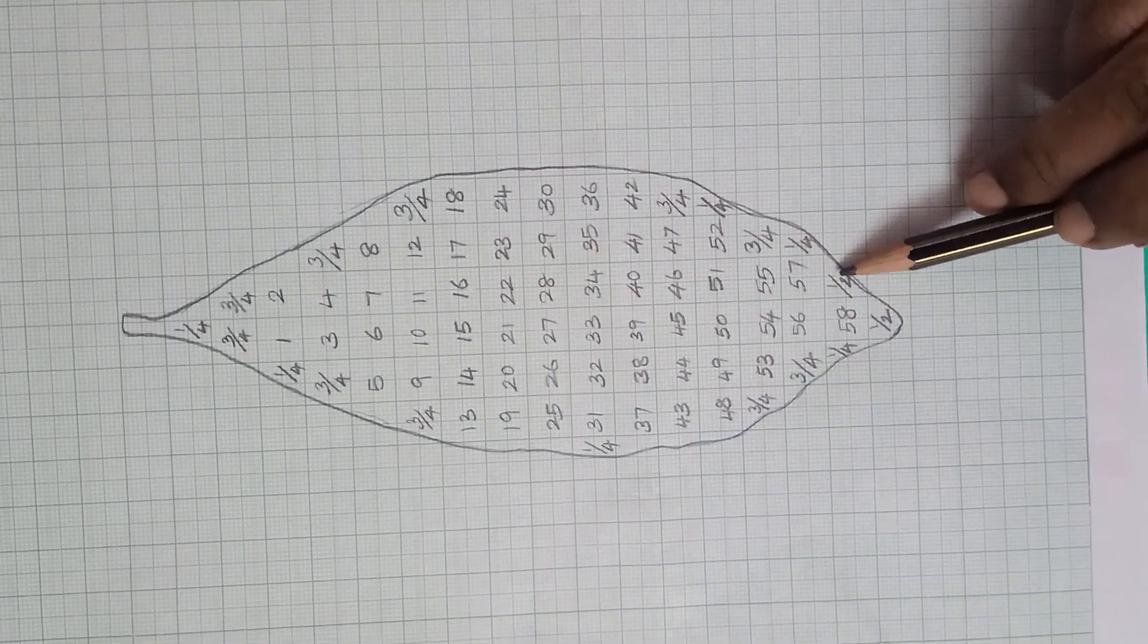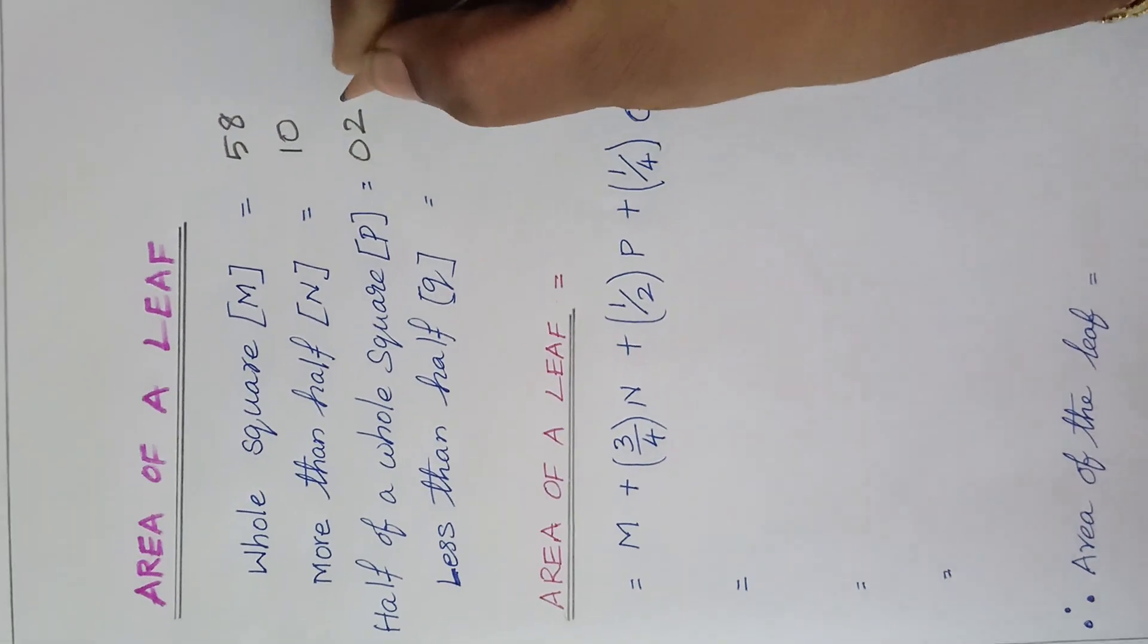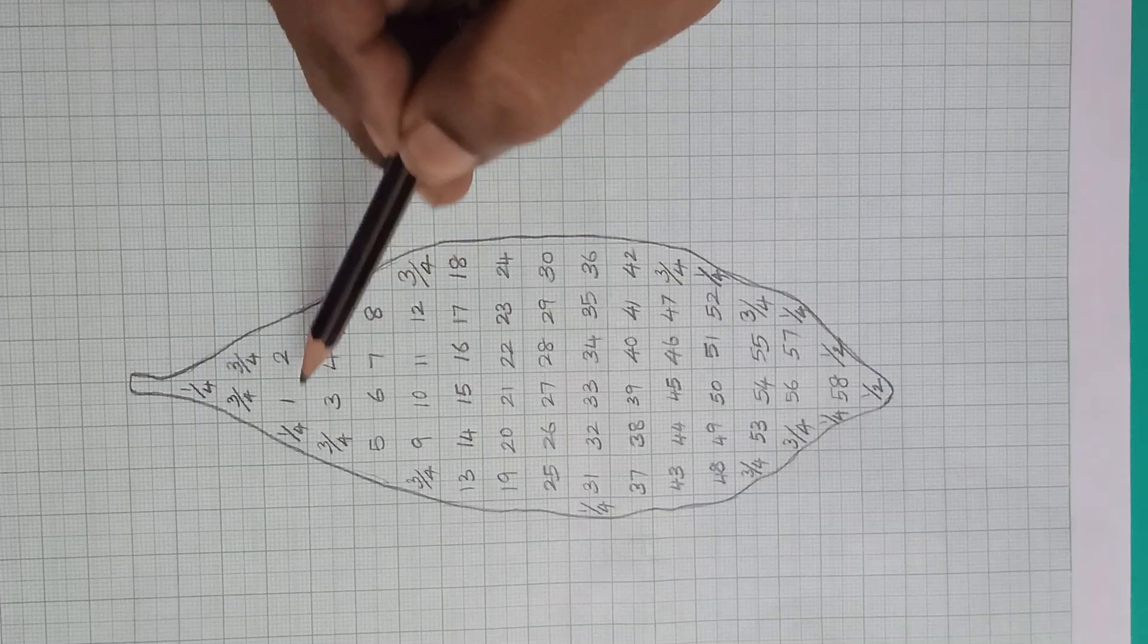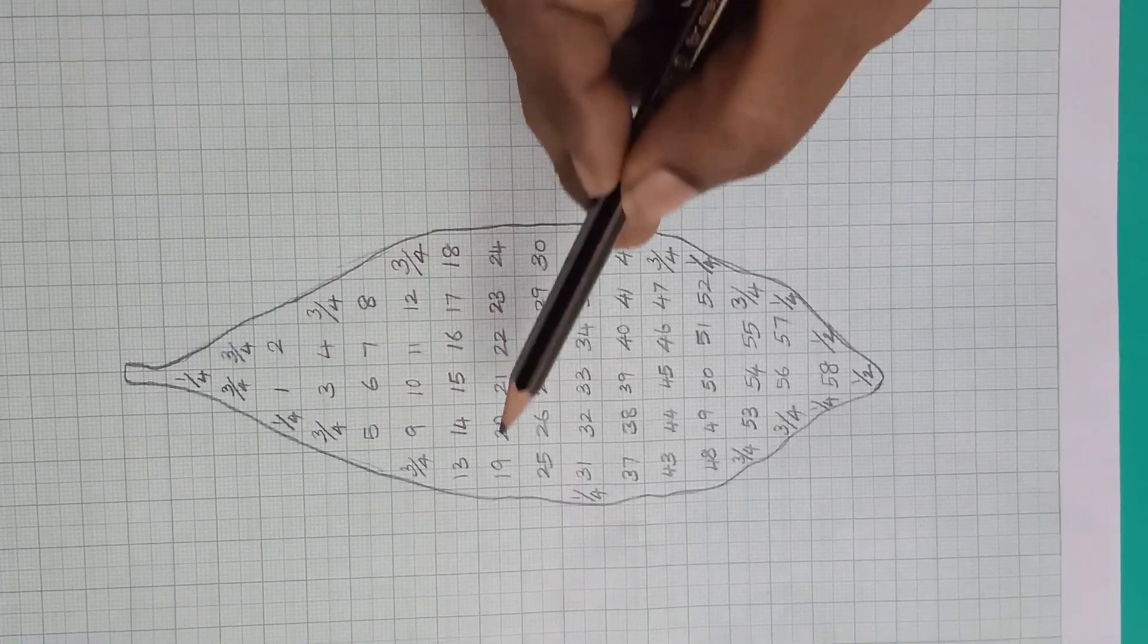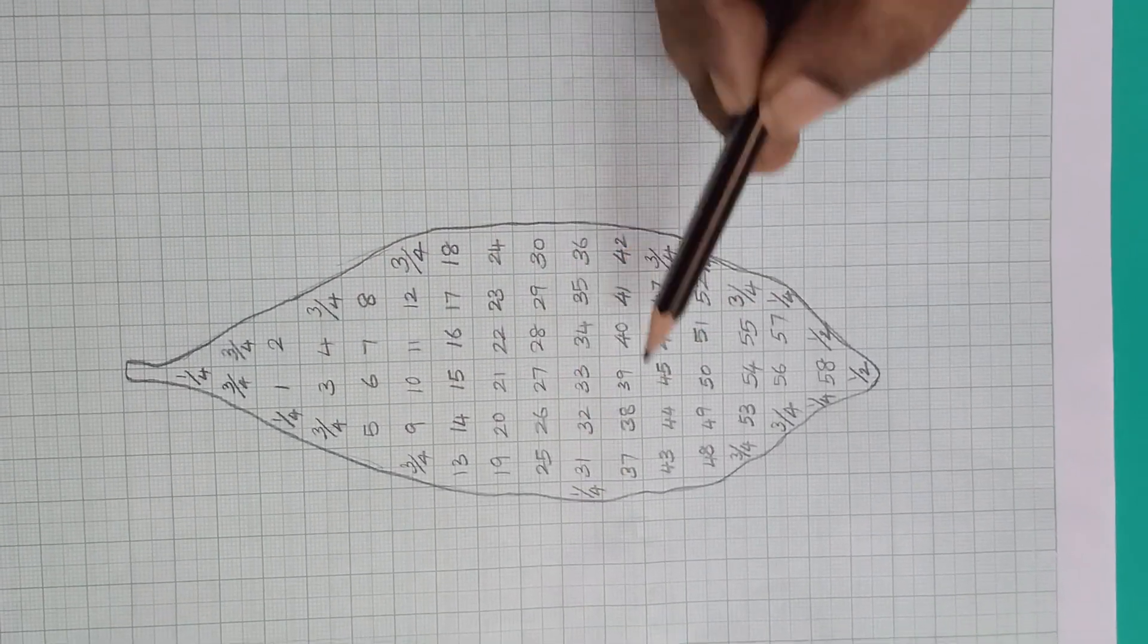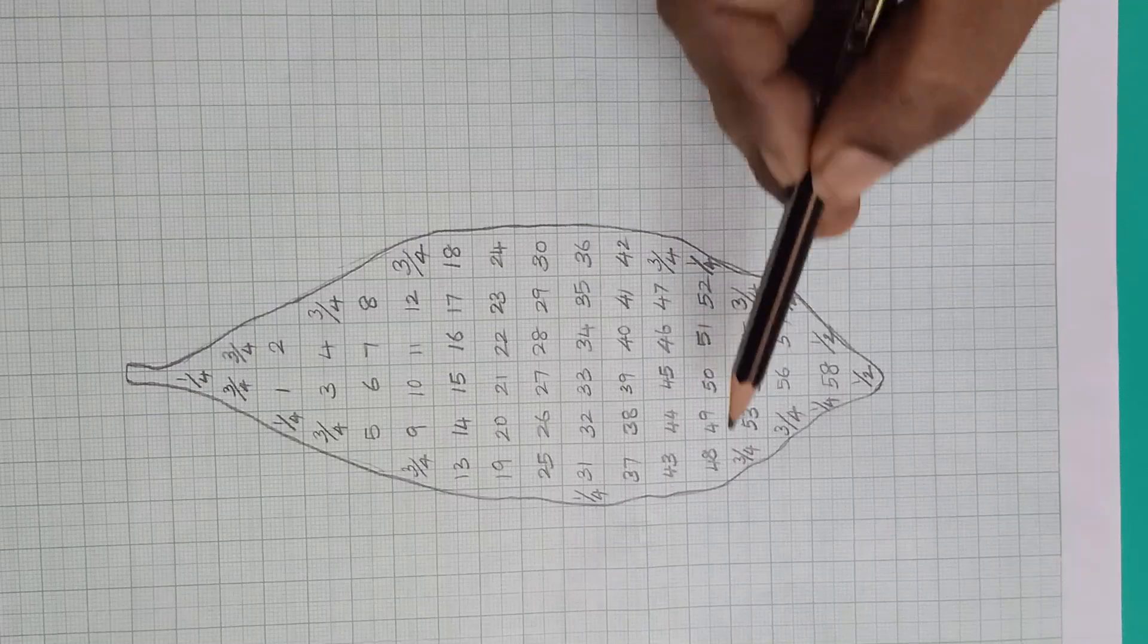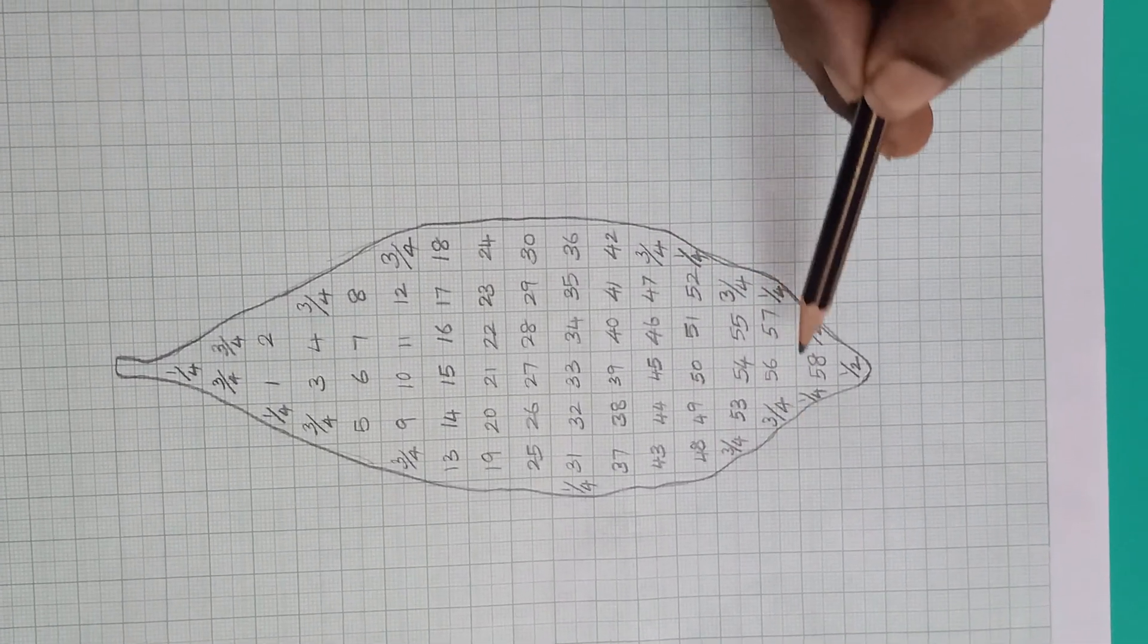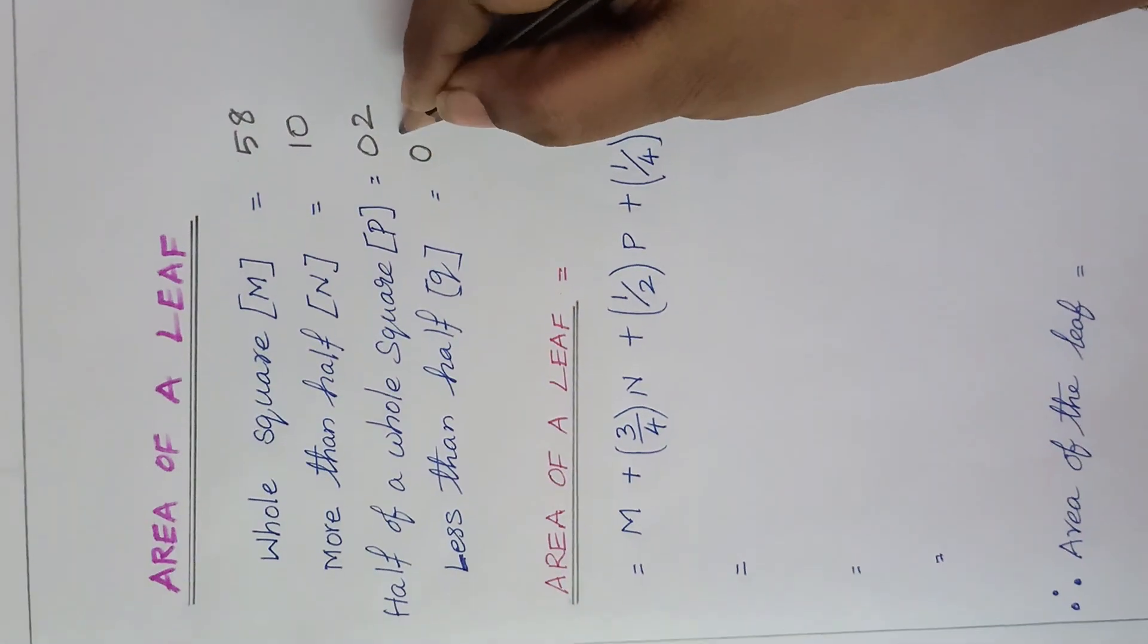And half. Here, 2 squares as half. So only 2. And 1 by 4: 1, 2, 3, 4, 5, 6. So totally 6.